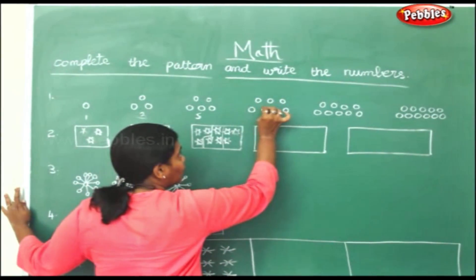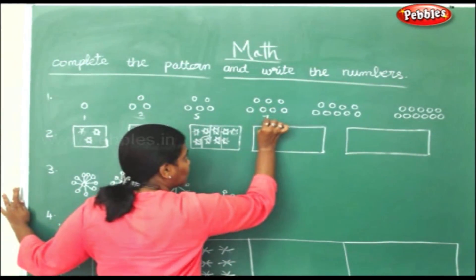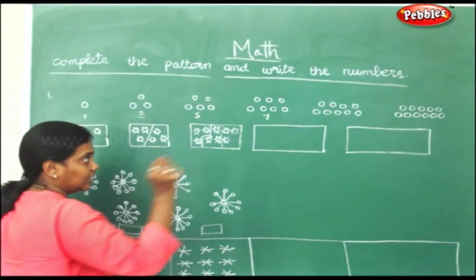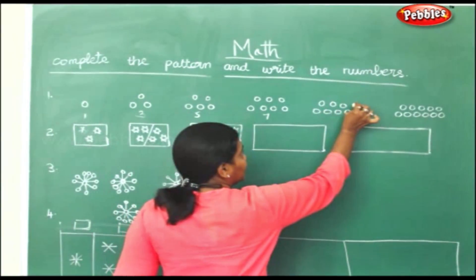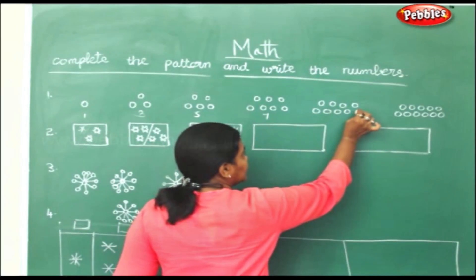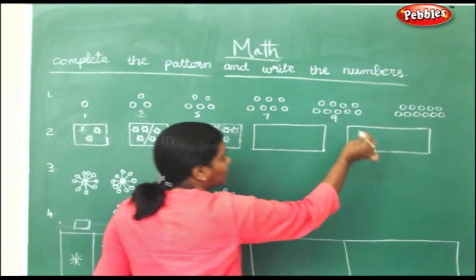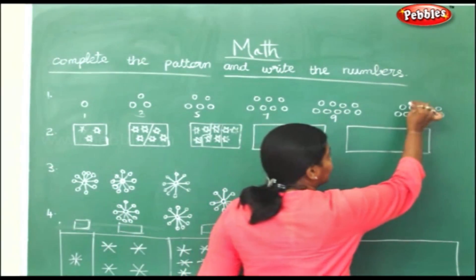Counting to confirm: 1, 2, 3, 4, 5, 6, 7. So what will be the next number? 9. Counting again: 1, 2, 3, 4, 5, 6, 7, 8, 9. The next will be 11.